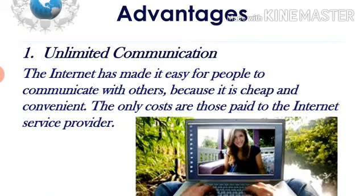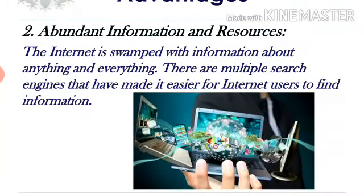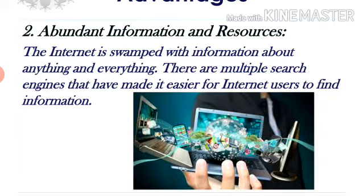The second advantage is abundant information and resources. The internet is flooded with information about anything and everything — ideas, thoughts, feelings, which we can share. For example, you have Wikipedia and online encyclopedias. If you want to research Egypt or any topic, you will get immediate results. The internet is packed with information related to any subject.